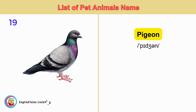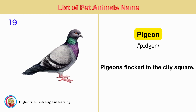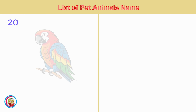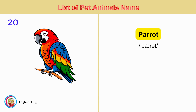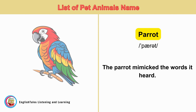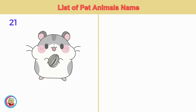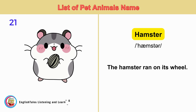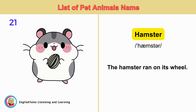Pigeon. Pigeons flocked to the city square. Parrot. The parrot mimicked the words it heard. Hamster. The hamster ran on its wheel.